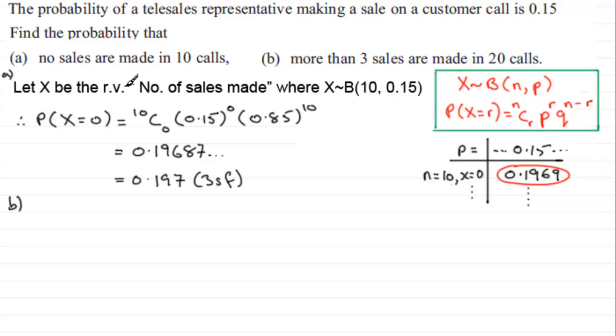So again, we can define this by a random variable X, only we've just got to change the value of n to 20. So we've got our random variable X defined as the number of sales made, where X is a binomial 20, 0.15.